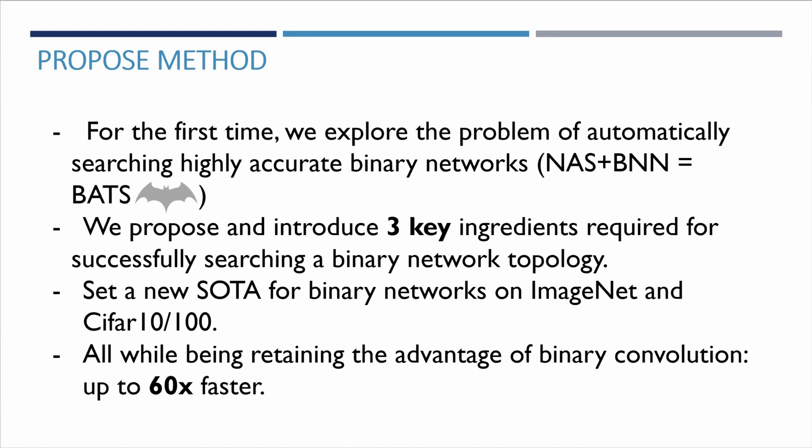A particularly promising direction for speeding up modern inference is network binarization, which is however hard to train. Another promising direction, which can be used to automatically find optimal topologies, is neural architecture search. Still, we would want to combine the two to maximize our gains.